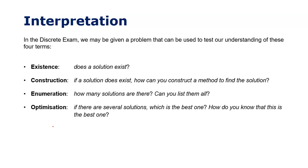Construction is about: can you find a method to solve a problem, assuming a solution exists? So construction is physically finding some method to reach the solution. Enumeration — the word starts with 'number' — is about how many solutions there are; you might want to list them all.